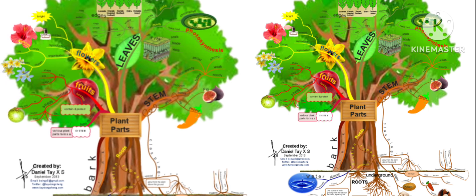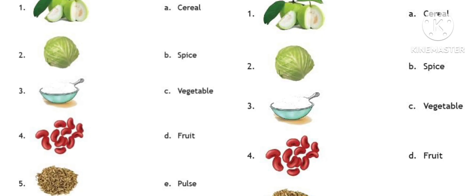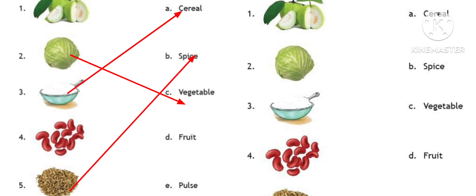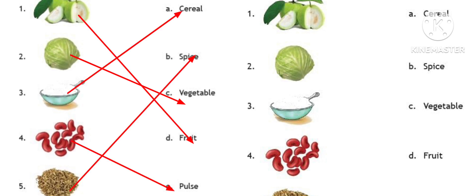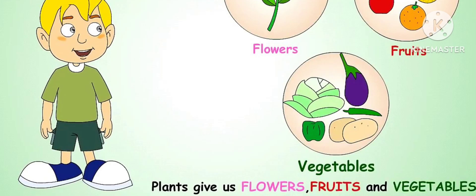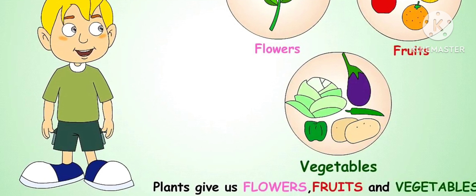Food. From plants we obtain fruits, vegetables, sugar, coffee, tea, pulses, cereals, and spices.